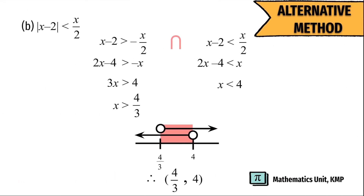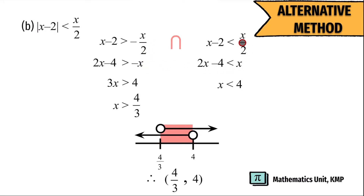This is an alternative method for the previous example. If you don't want to bring negative x over 2 to the left-hand side, you can also multiply both sides by positive 2. Multiplying x minus 2 by positive 2 gives 2x minus 4, and multiplying negative x over 2 by positive 2 gives negative x. Do the same for the second part of the inequality, and you will get the same answer.